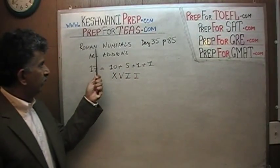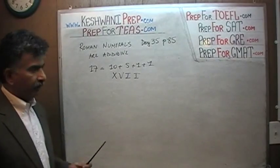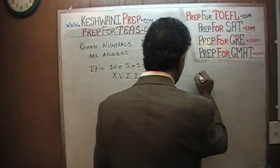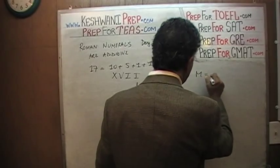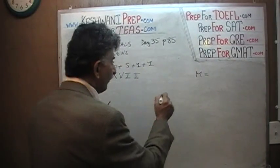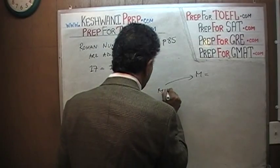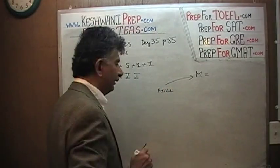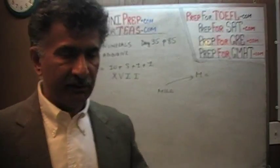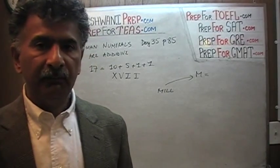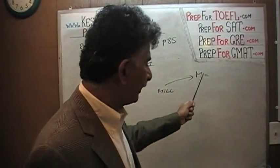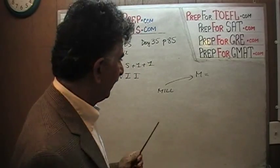Let's look at some basic symbols. M equals 1,000. M stands for the Latin word 'mil,' which means 1,000. Mil does not mean million. In Latin, the word mil means 1,000, and hence the letter M stands for 1,000.